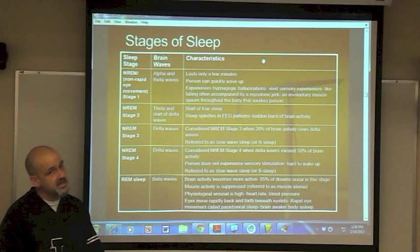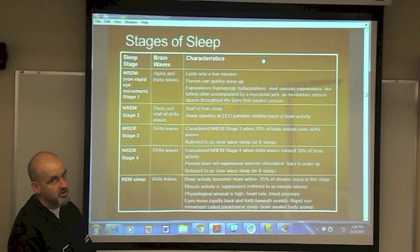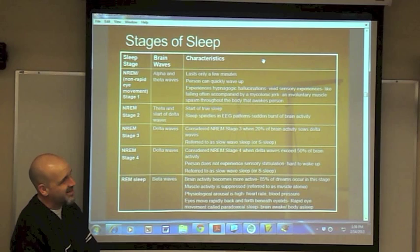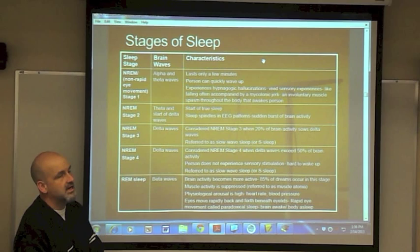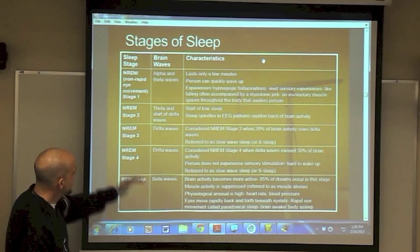NREM stage two is the start of true sleep. The person is now primarily in theta waves — alpha waves are gone. Brain activity slows down even more. Sleep spindles appear in the EEG as sudden bursts of brain activity, which can look like brief twitching. As theta transitions into delta waves, the person enters NREM stage three.